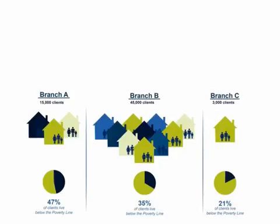Let's take this one step further and discuss how to find the rate of poverty in your group when you have poverty rates for a number of subgroups. This is common among organizations that have different branch offices. Each branch office reports the poverty rate to the organization's leadership, which in turn must determine the poverty rate among all clients. To do this, you must use a weighted average to account for the different numbers of clients at each branch.